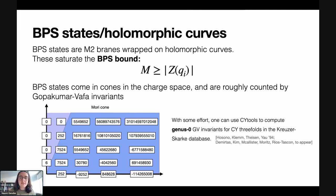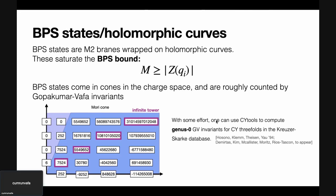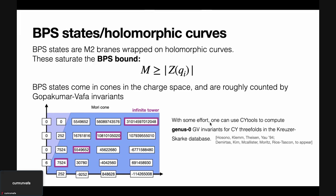A question is raised about whether this concerns the genus-zero version, which is a combination of various spins. The speaker confirms they are really talking about the genus-zero GV invariants, which is why they included the qualifier that BPS states are 'roughly' counted by those invariants.